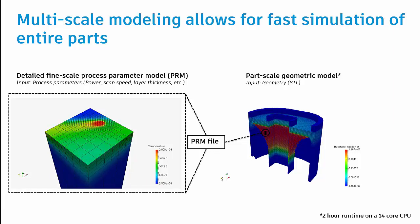That PRM file then gets mapped onto the part level when we pick a geometry. Now what we've said is, if we know how this part's going to thermally respond under a parameter setting.